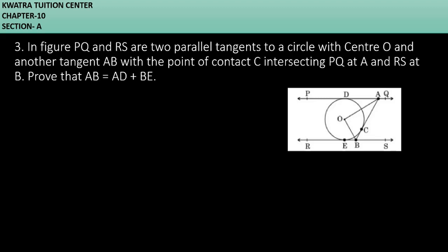Let's start with question number 3. It says in figure PQ and RS are two parallel tangents to a circle with center O and another tangent AB with point of contact C intersecting PQ at A, RS at B.